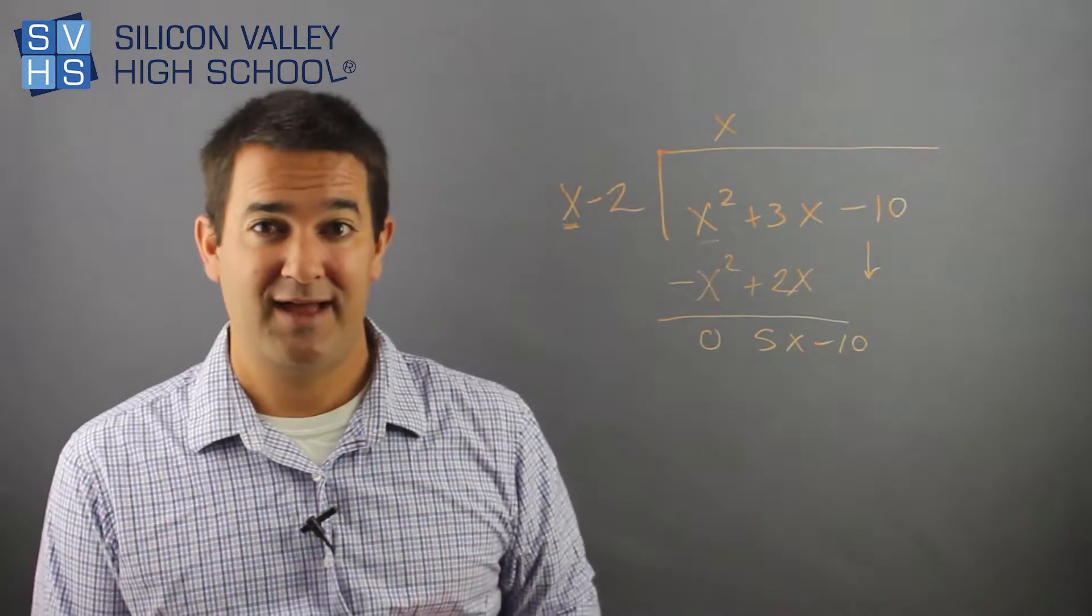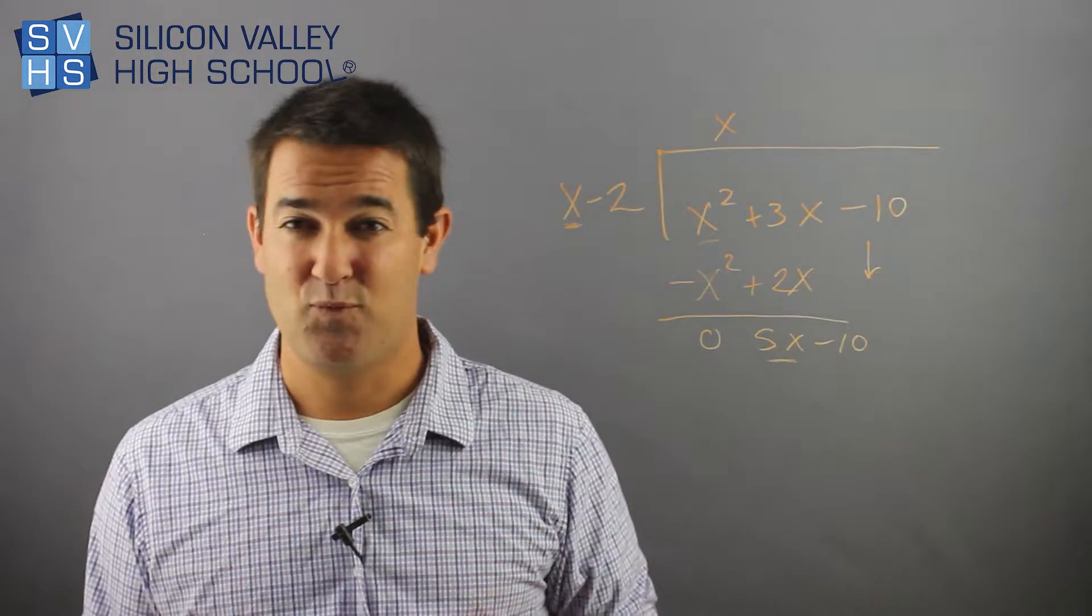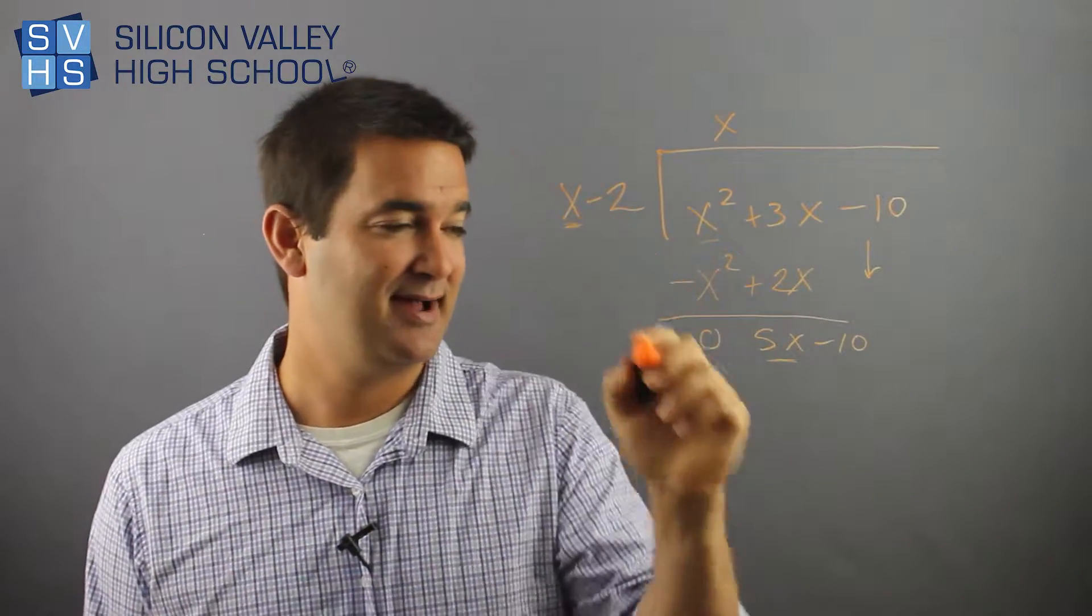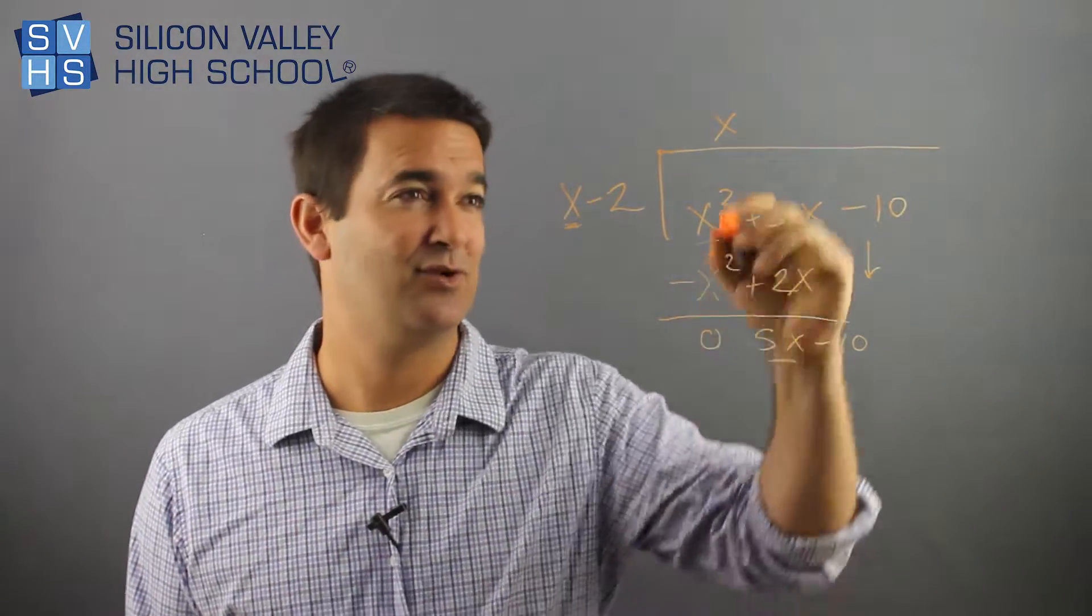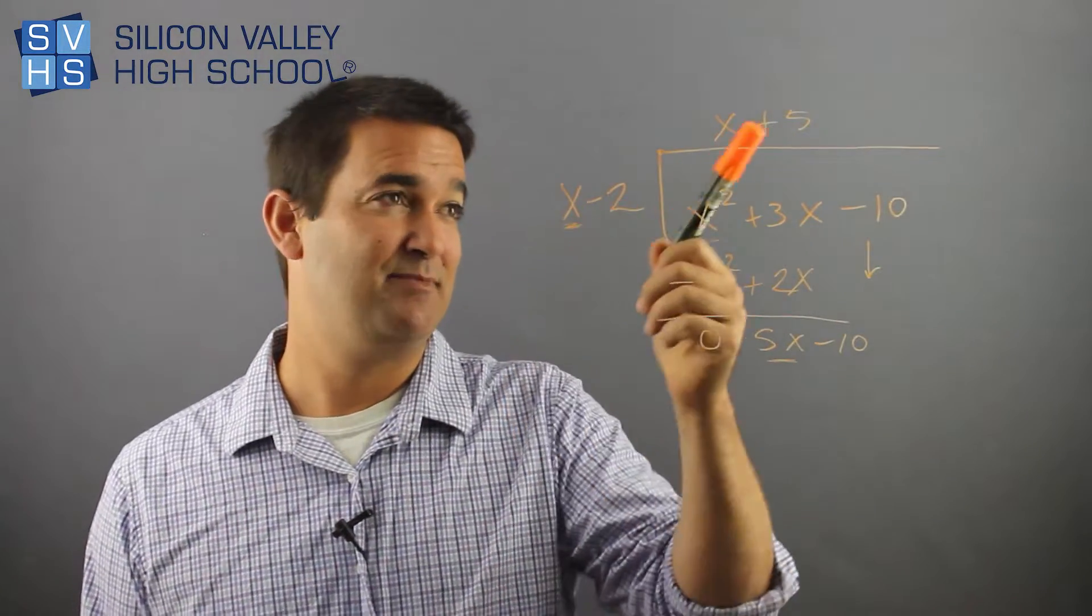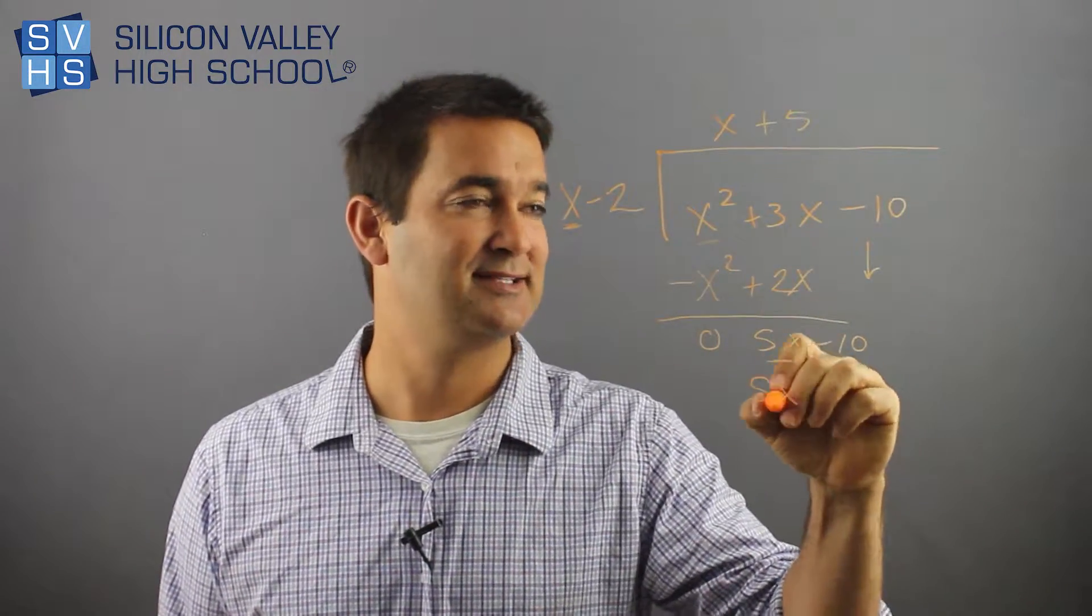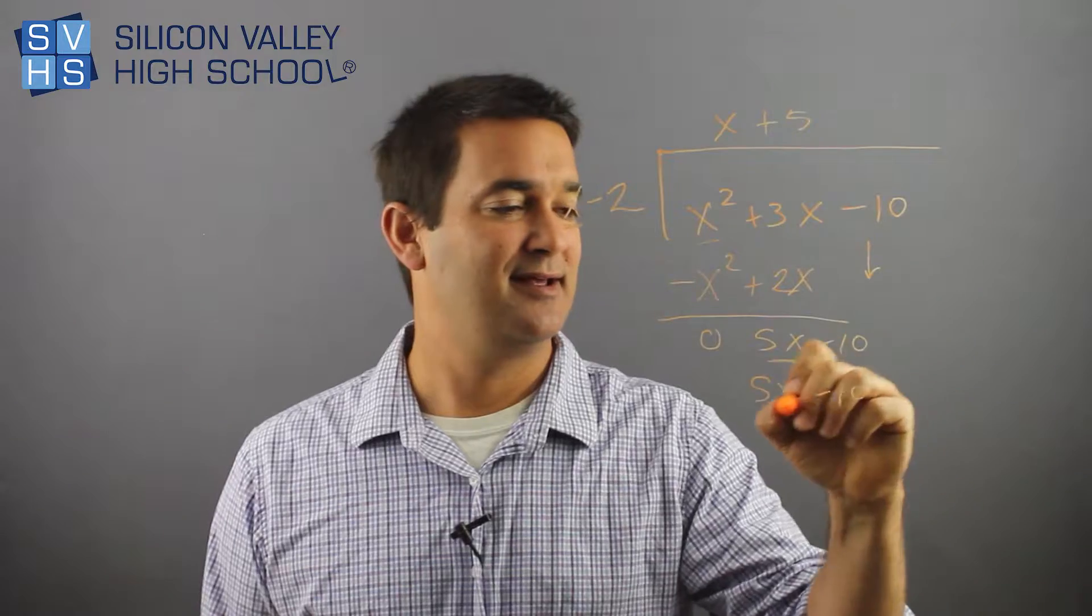Now, same thing. Now I only look at my first guy, and I only look at my first guy. What would I multiply x by to get 5x? The answer, of course, is a positive 5, so I put plus 5. But even though I only cared about him to pick the 5, he distributes to both.